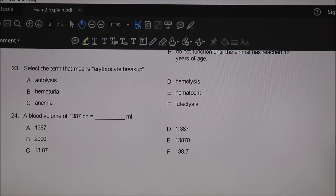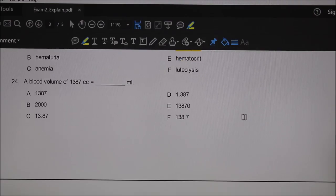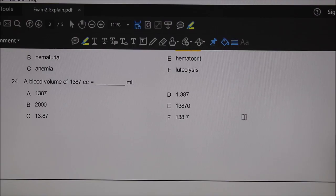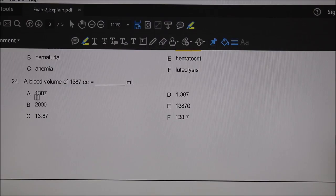Select the term that means erythrocyte breakup. This happened from long ago, probably exam one or day one or two of the course. Breakup, blood breakup, red blood cell breakup: hemolysis. A blood volume of 1387 cc's equals how many mL? One-to-one relationship, so it's 1387 mL.